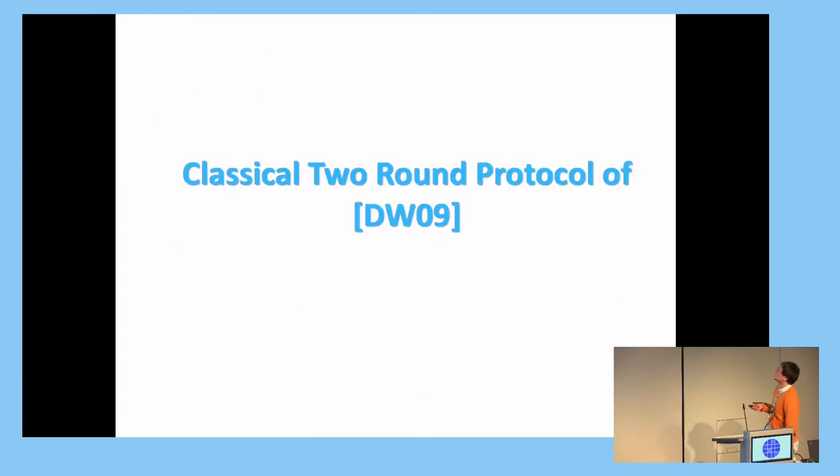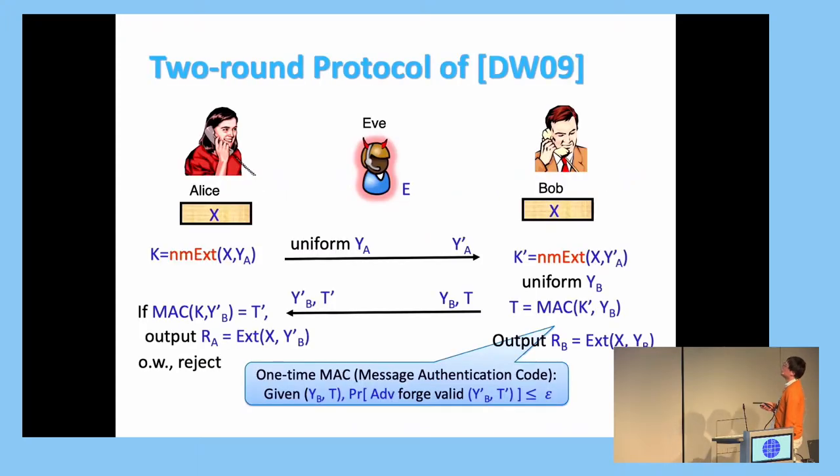OK, so let's see how the DW09 protocol runs. So this is the DW09 protocol. So it starts, I hope you can see, it starts here. So first, Alice uses the non-malleable extractor and samples random Y and extracts K. Then she passes the random seed, and Eve might change that to some Y'. And Bob extracts the K' by Y'.